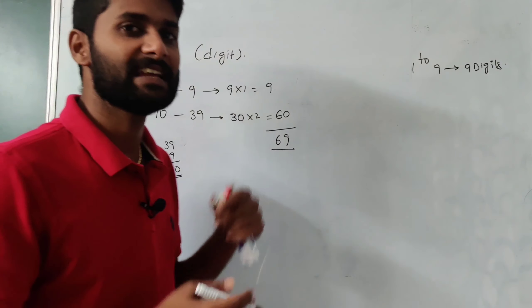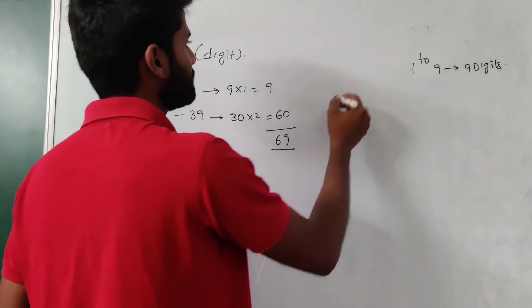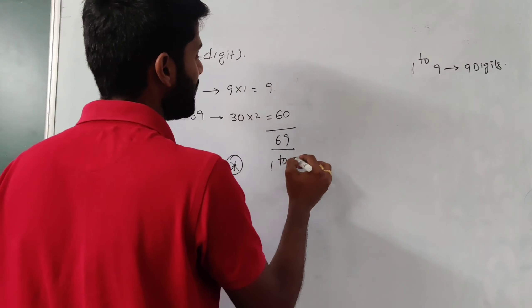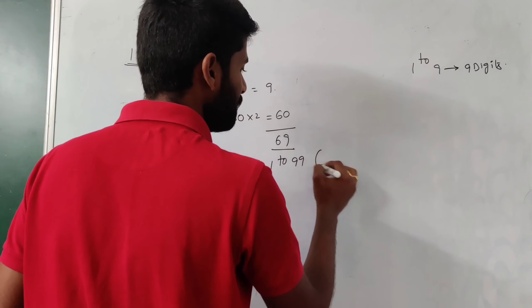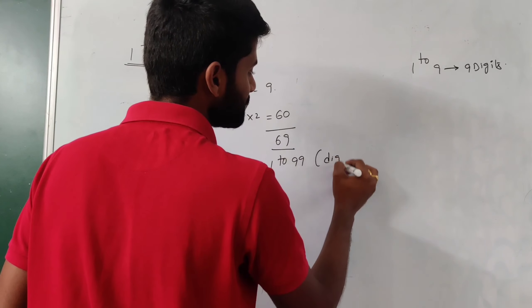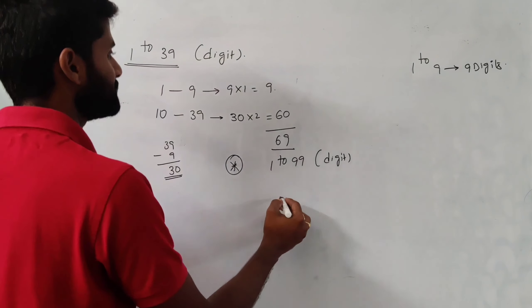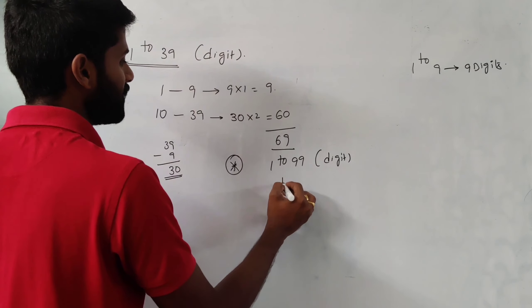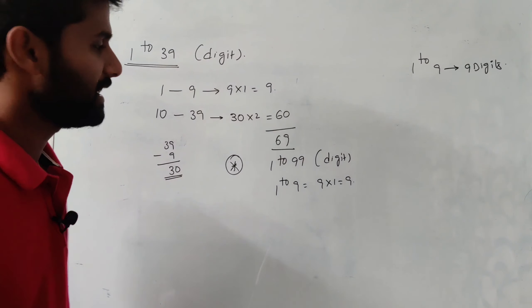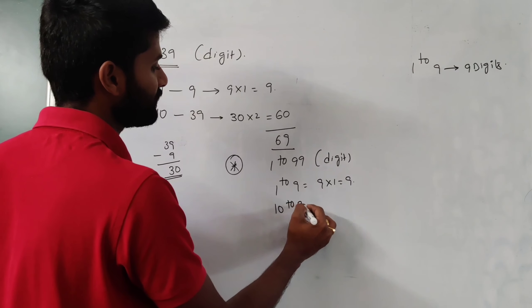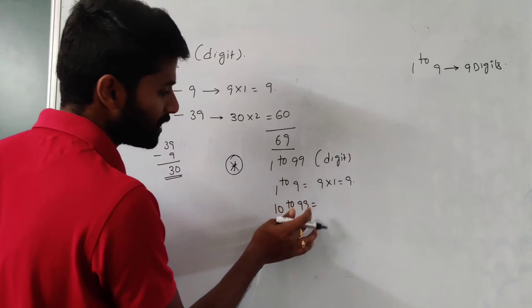For example, from 10 to 15, how many digits are we using? We have numbers 10, 11, 12, 13, 14, 15 — that's five numbers. Each two-digit number uses two digits. So with five numbers each having two digits, the total number of digits used is 10 digits.